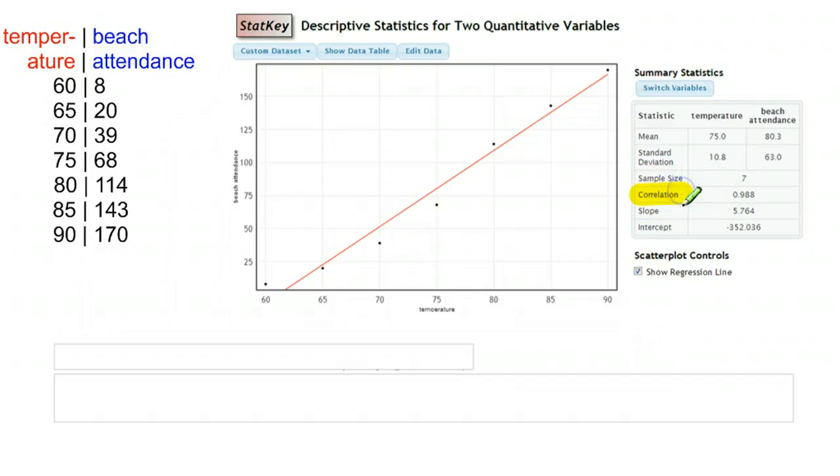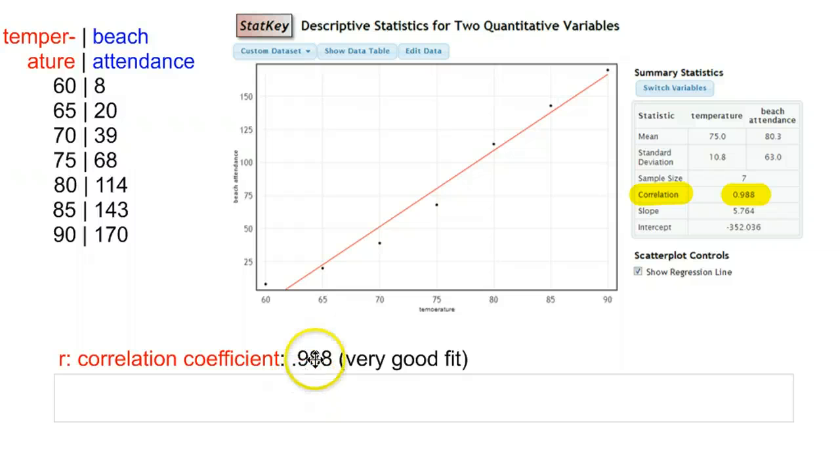we have the correlation, the slope and the intercept. We'll talk about the other two later, but the correlation coefficient here, this 0.988, tells me how good of correlation I have, how good of a linear relationship I have. And so 0.988 is an excellent fit.